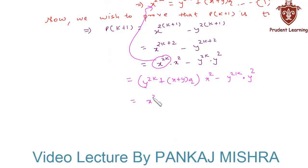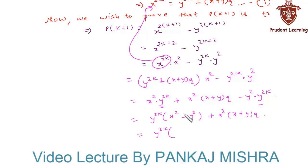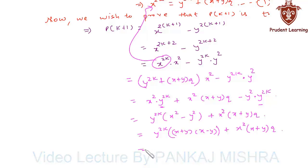Expanding, this equals x squared into y to the power 2k, plus x squared into (x plus y) into q, minus y squared into y to the power 2k. Taking y to the power 2k common from the first and last terms, we get y to the power 2k into (x squared minus y squared), plus x squared into (x plus y) into q.